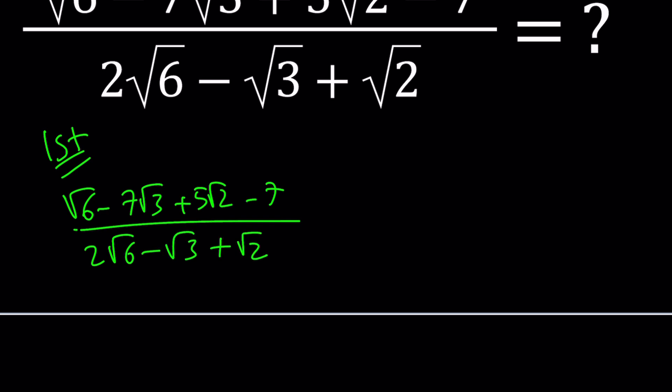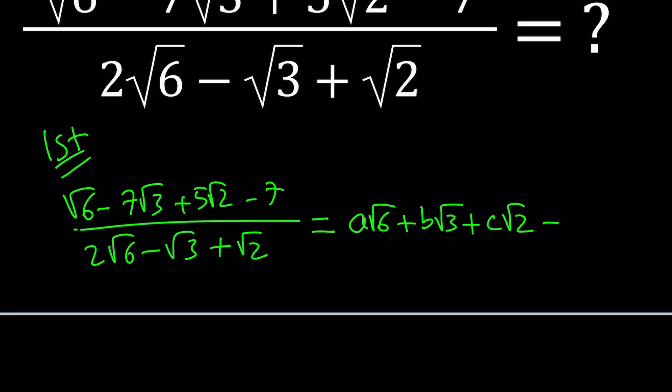Since we have all these radicals in our expression, I'm going to assume that the result is going to be something like a times the square root of 6 plus b times the square root of 3 plus c times the square root of 2 plus d, where a, b, c, d are rational numbers. They don't have to be integers but most probably they are. This is because when you multiply terms containing all these radicals together you get something similar — they may form a ring or some abstract algebraic structure. So let's cross-multiply to find the values of a, b, c, and d.